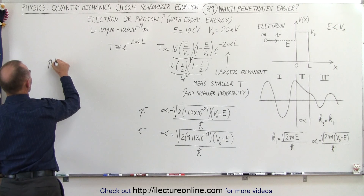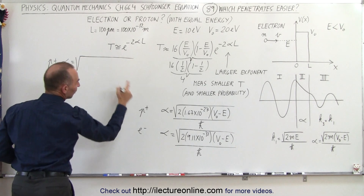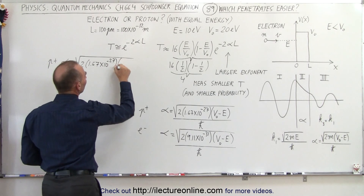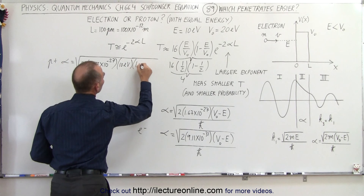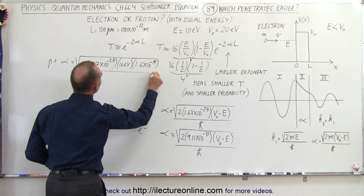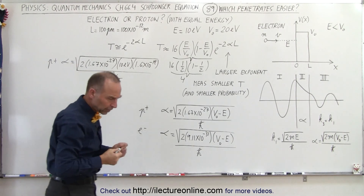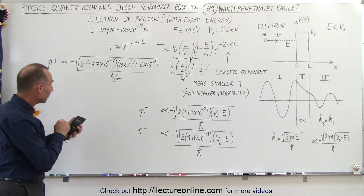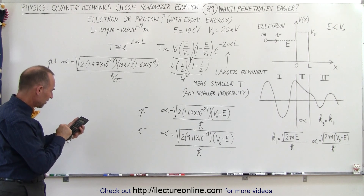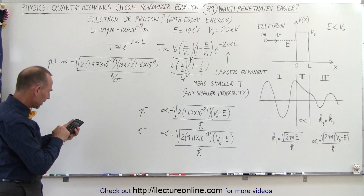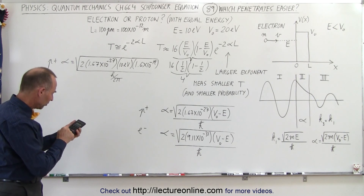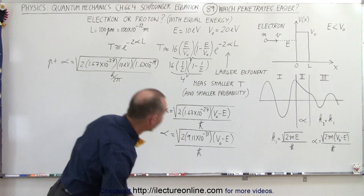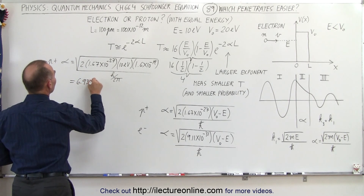For the proton, alpha is equal to the square root of 2 times 1.67×10^-27 (the mass of the proton), times the energy difference of 10 electron volts converted to joules as 1.6×10^-19, all divided by h-bar. Computing this: 2 times 1.67e-27 times 10 times 1.6e-19, take the square root, multiply by 2π, and divide by Planck's constant 6.626×10^-34. This gives a result of 6.93×10^11.